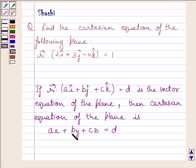Where A, B and C are the direction ratios of the normal to the plane. This is the key idea to solve the given question.